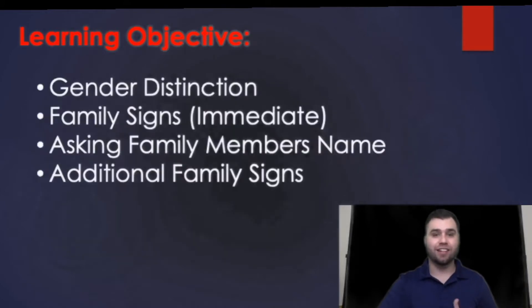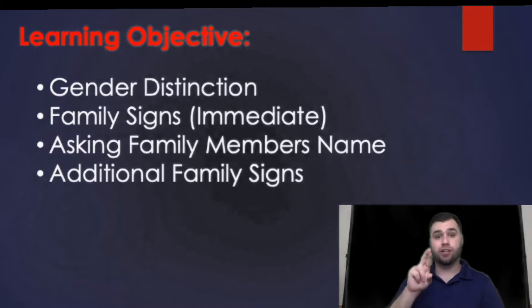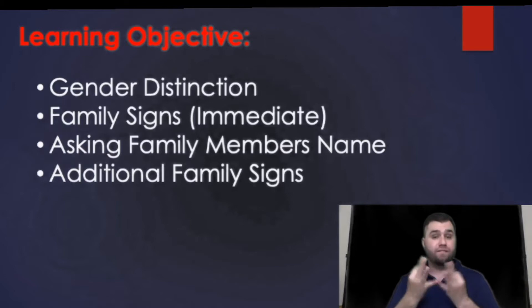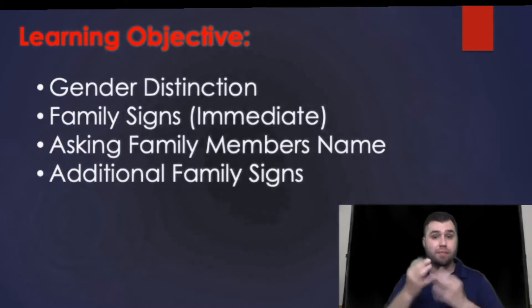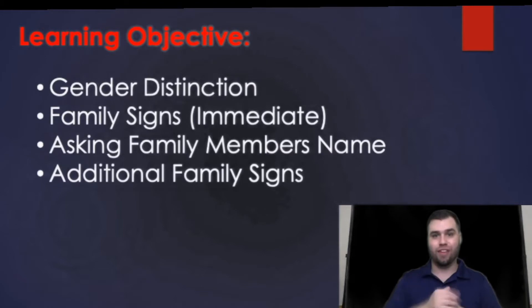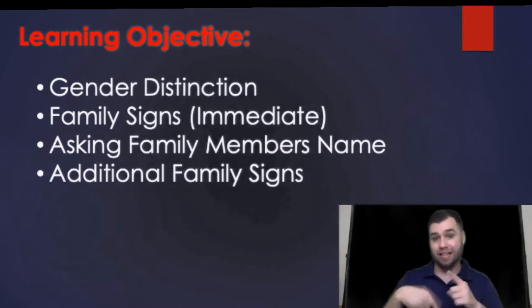Let's get started. The learning objectives: we're going to be learning about the gender distinction and where we place family signs, how to ask family members their name, and we're going to add on some additional family member signs for those who want to know how to find other family members' names or signs as well.